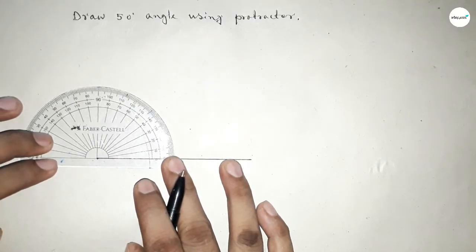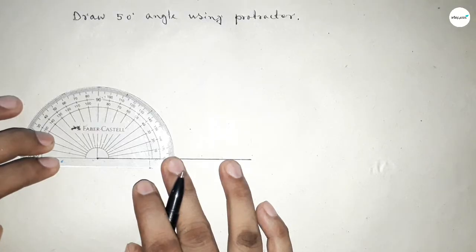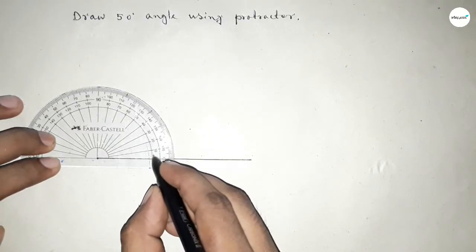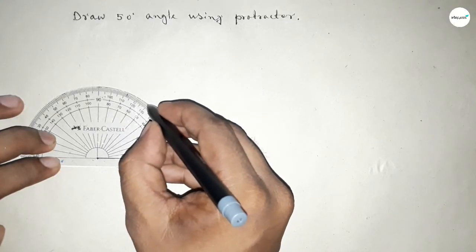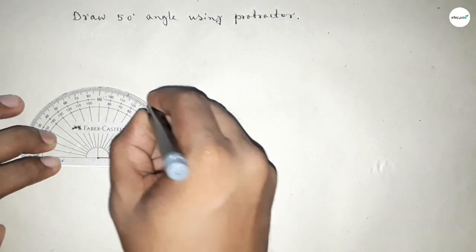Next counting the angle so this is 0, 10, 20, 30, 40 and this is 50. Okay, so this is 50 degree.